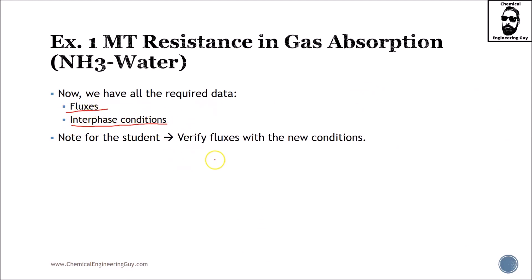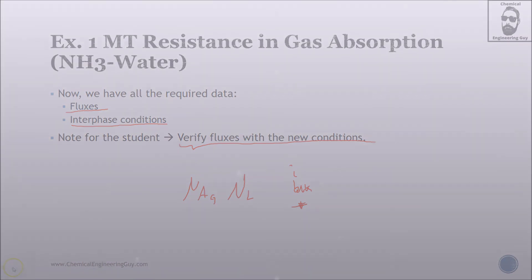For now we have all fluxes, all interface conditions, and I will recommend you if you want to verify the flux of G and L using all the conditions that we have: interfaces, bulk phases, and equilibrium ones. This is it for mass transfer resistance coefficients, overall mass transfer coefficients, and local mass transfer coefficients.